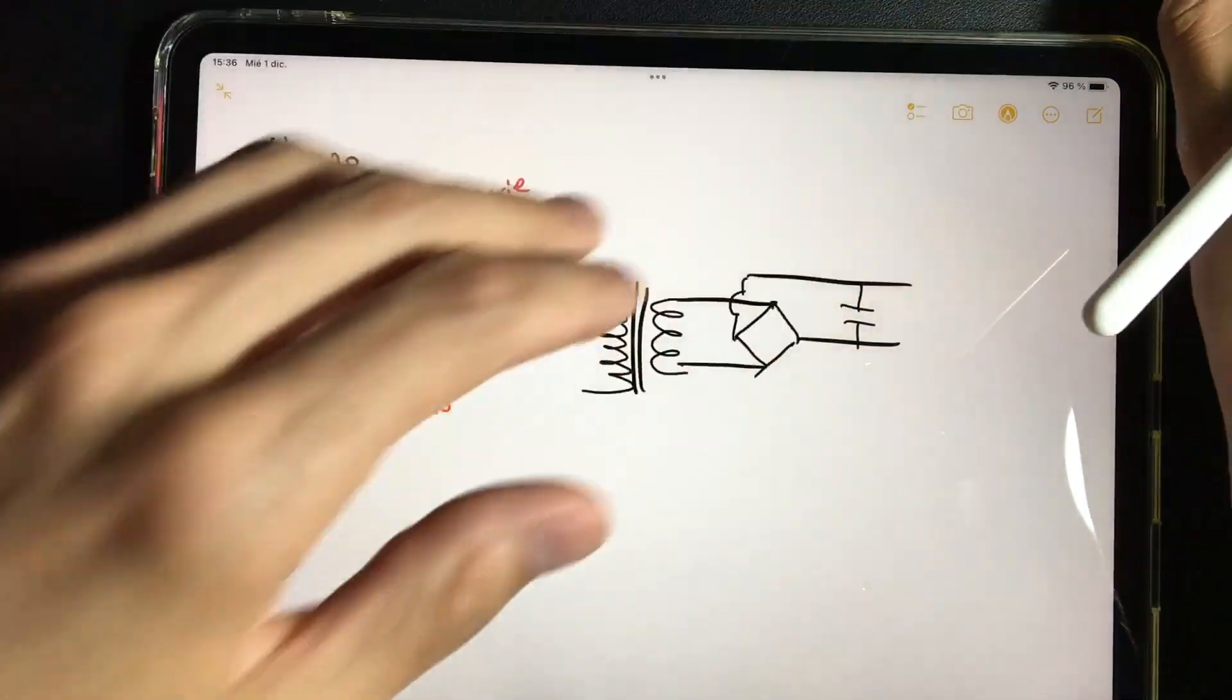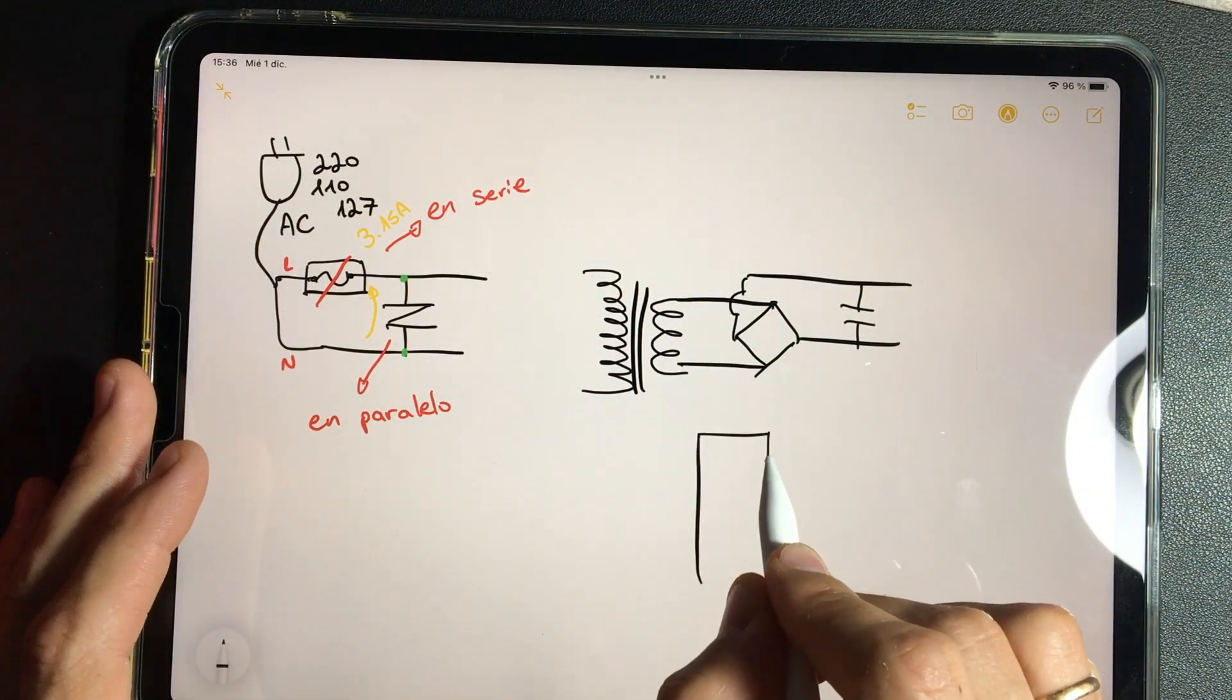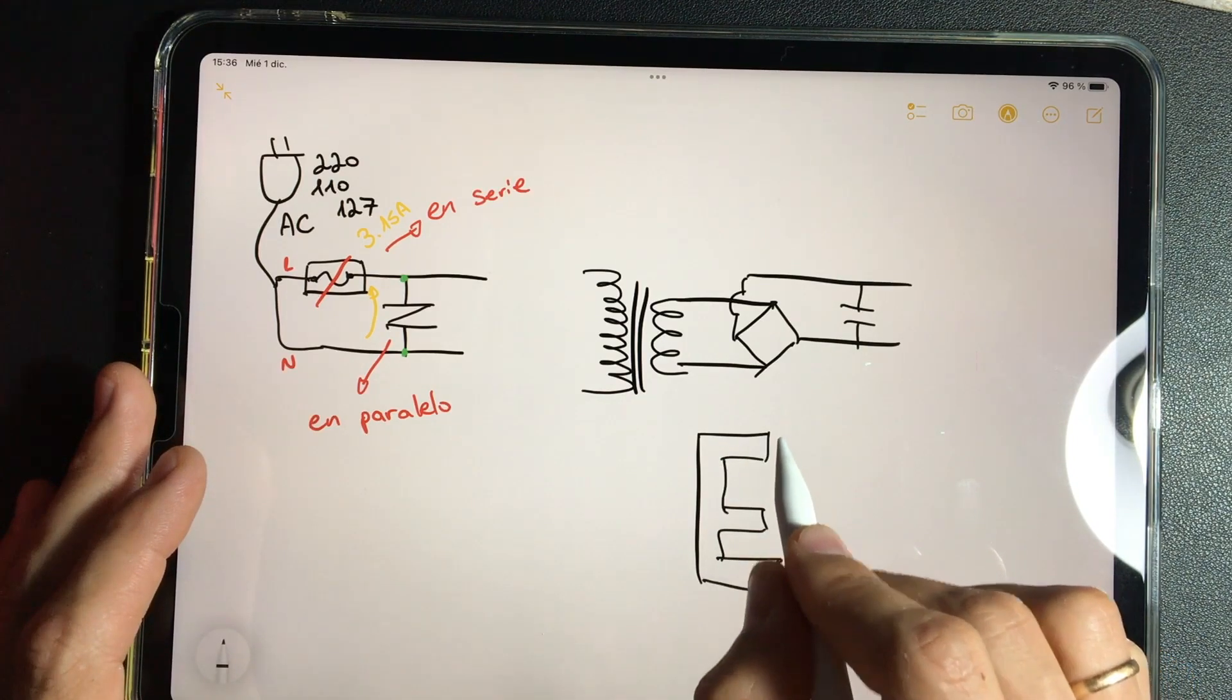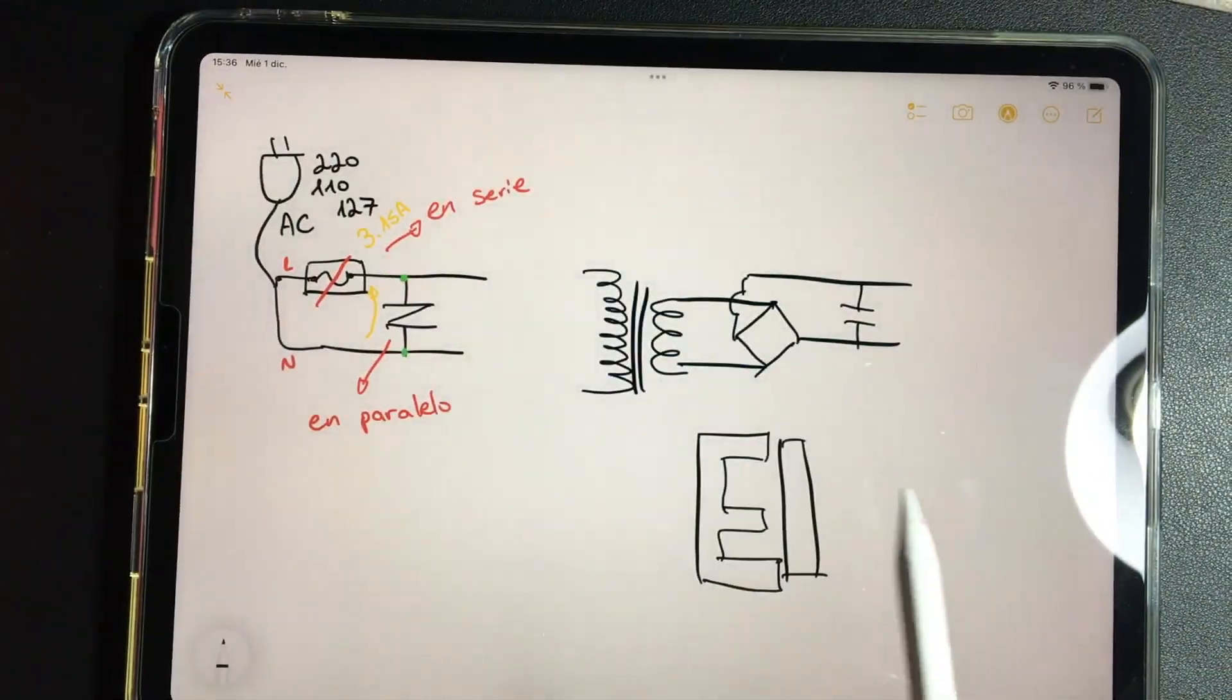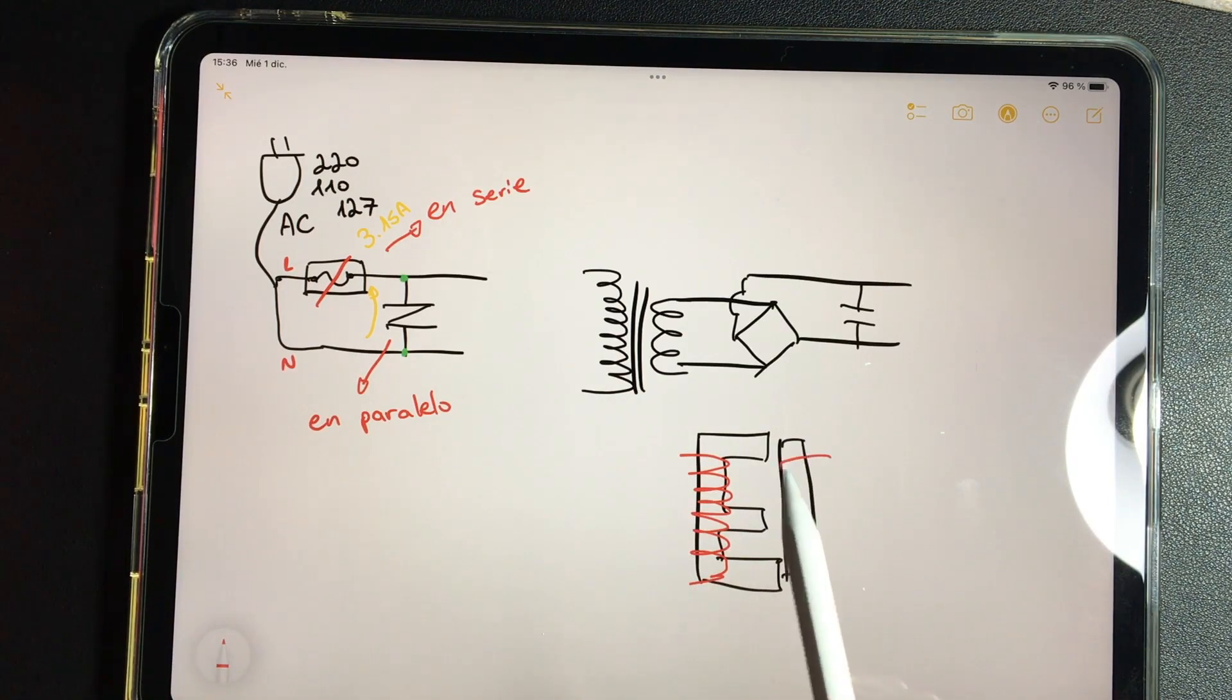A transformer if we disassembled it would be several plates in the form of E and in the form of I, glued one above the other, in which there is a copper winding which makes a sinusoidal wave that constantly makes the electrons go from one side to the other. It magnetizes the core and that magnetism excites the secondary coil.